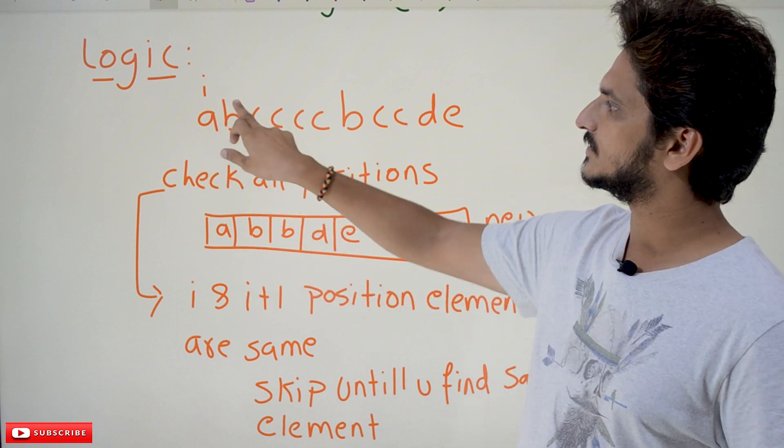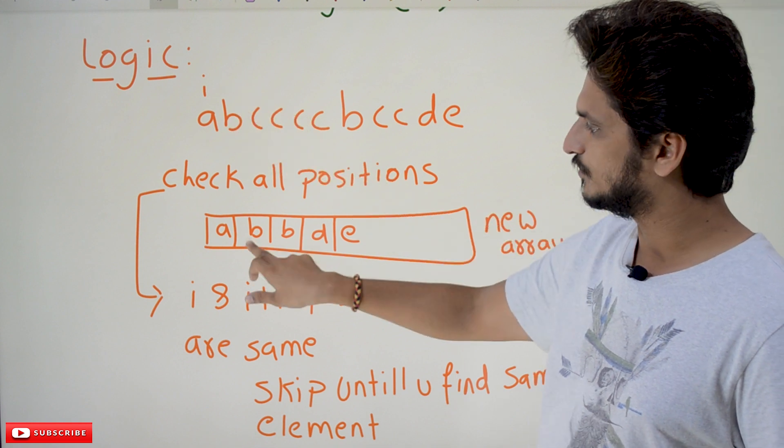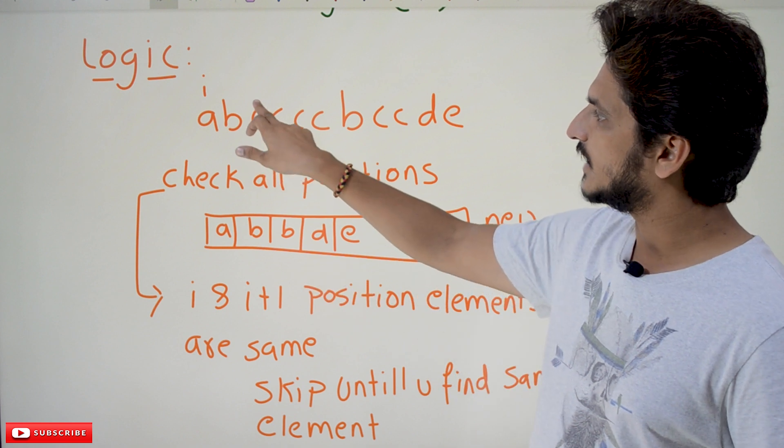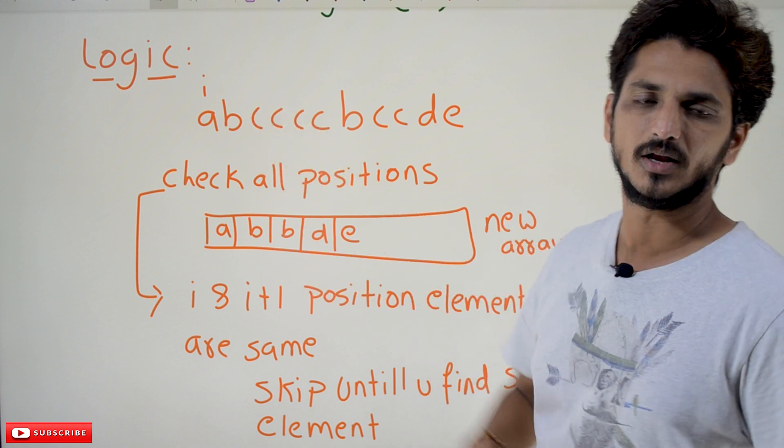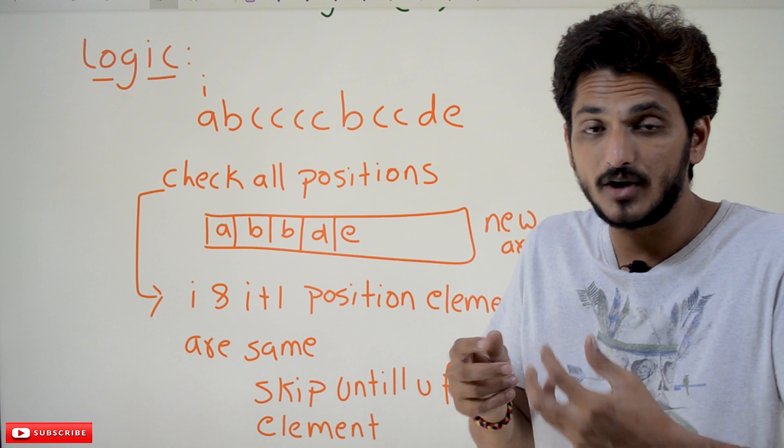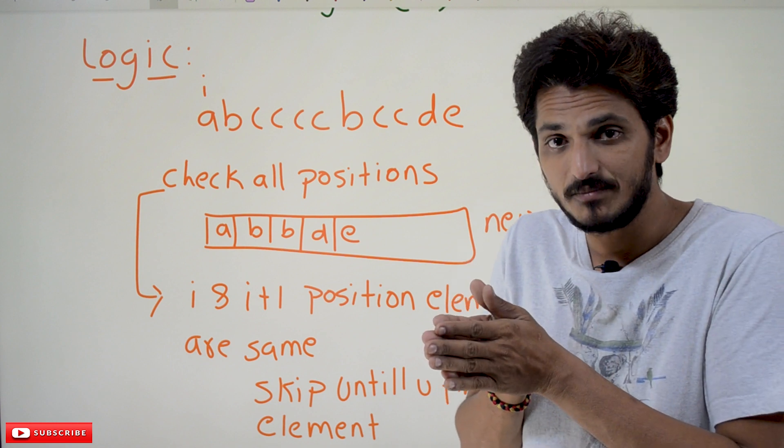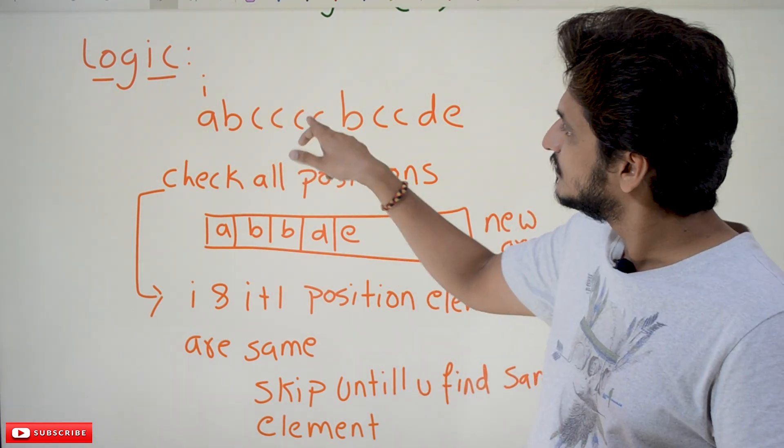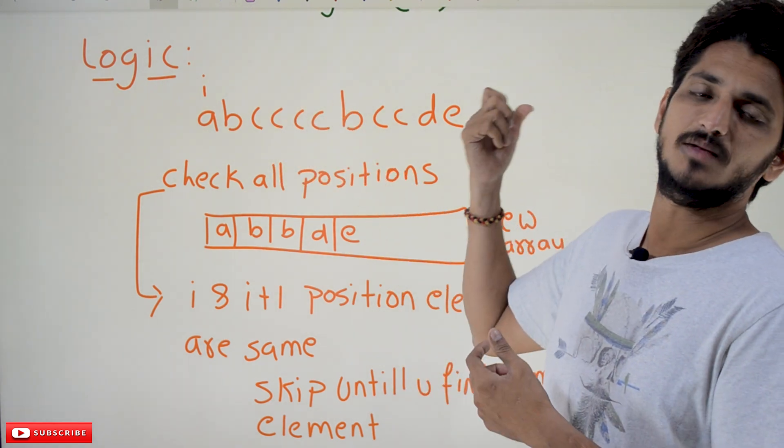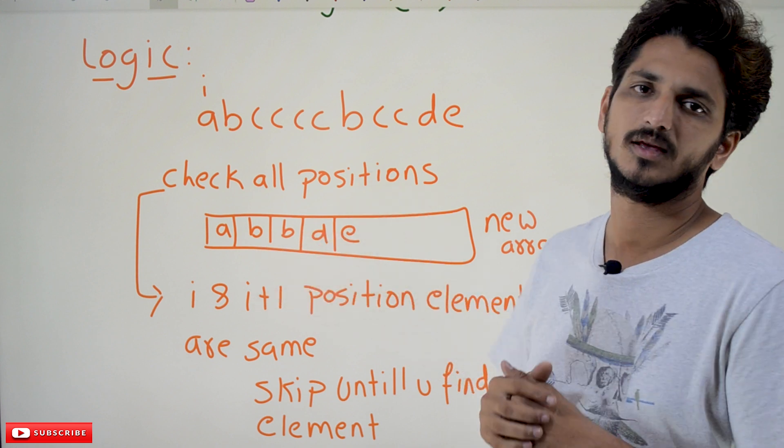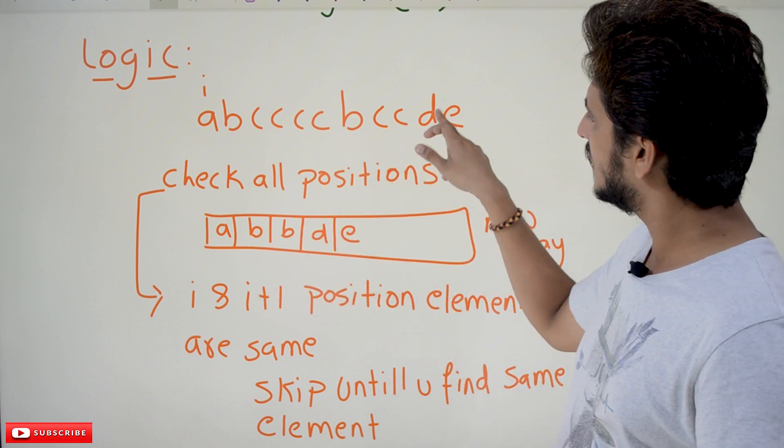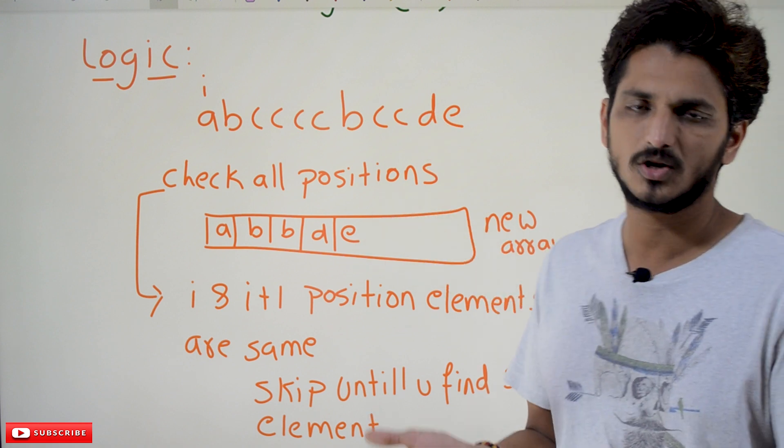Next i plus plus, i and i plus one position is not same. So b copied down to the new array. Next i comes here, i and i plus one, both are same. Whenever you find i and i plus one position is same, if the condition satisfies, loop until you find the similar elements, skip these elements, don't copy. Then you come here, copy, cc skip, d e copy. This is what the logic is.